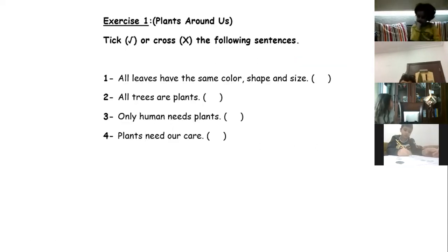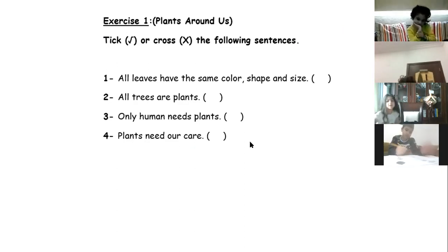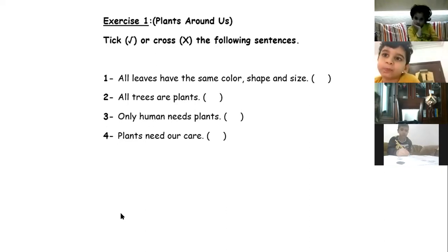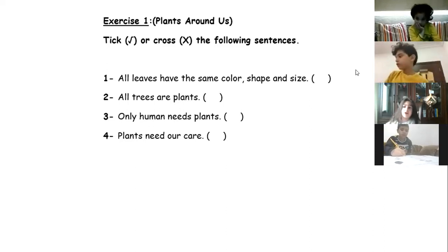Plants are very important. Now listen — you are going to read the sentences and I'm going to help you. In this exercise we have to put a tick or a cross. After we read the sentence, Kurban is going to read the first one and I'm going to help you. Okay Kurban, start number one.